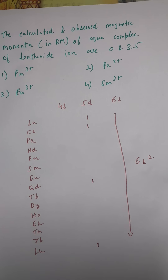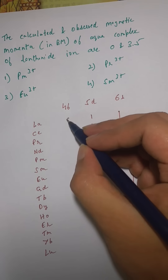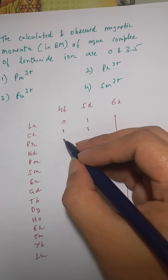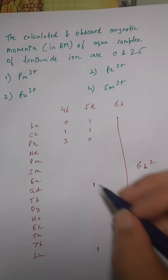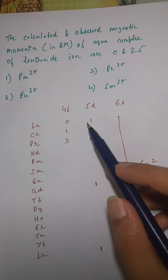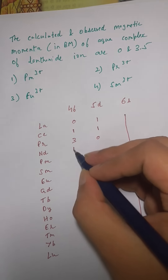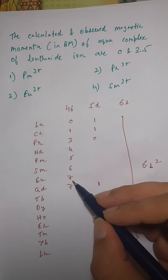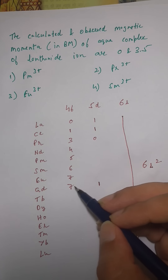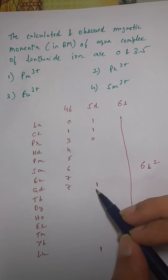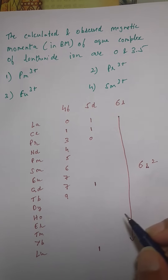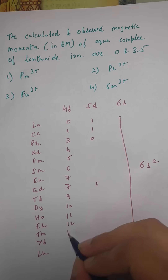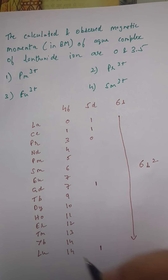Lanthanum has zero 4f electrons and cerium has one. Then in praseodymium it becomes 4f³ because it does not have any d electrons. Remember, only those four elements have d electrons. For europium it's 4f⁷ and for gadolinium also it's 4f⁷, but gadolinium has one d electron. Then moving on: dysprosium gets 4f¹⁰, holmium 4f¹¹, erbium 4f¹², thulium 4f¹³, ytterbium 4f¹⁴, and lutetium also 4f¹⁴.